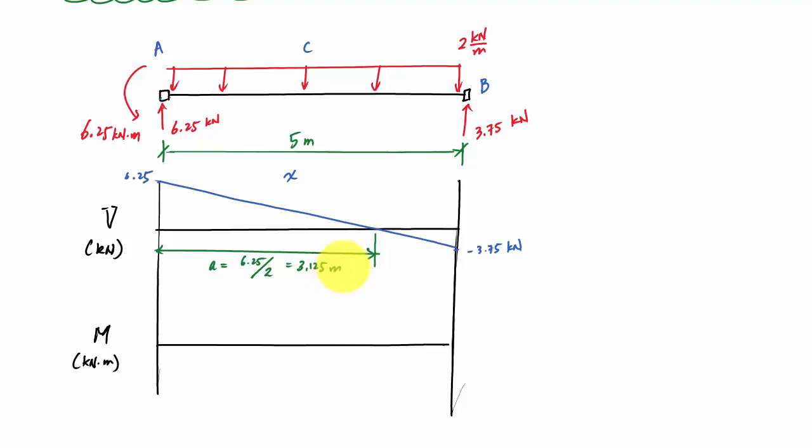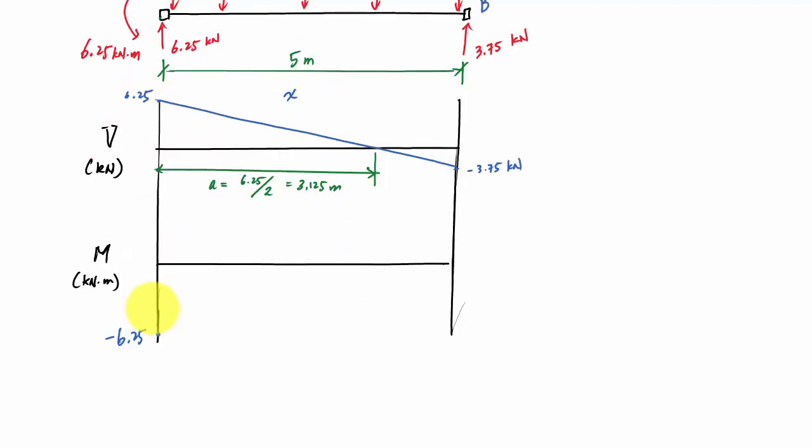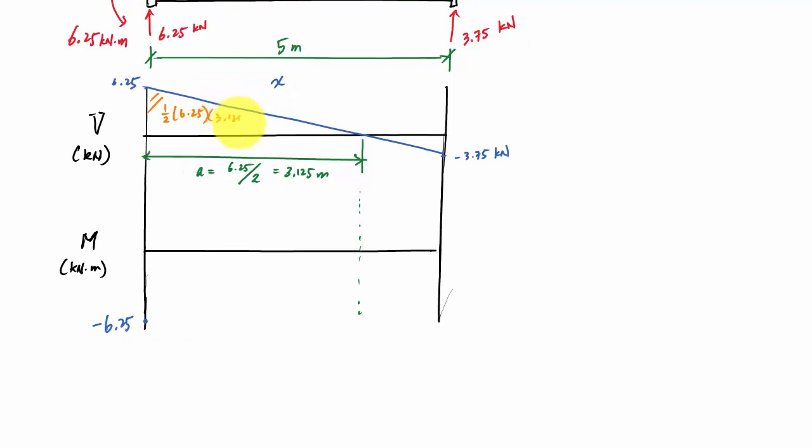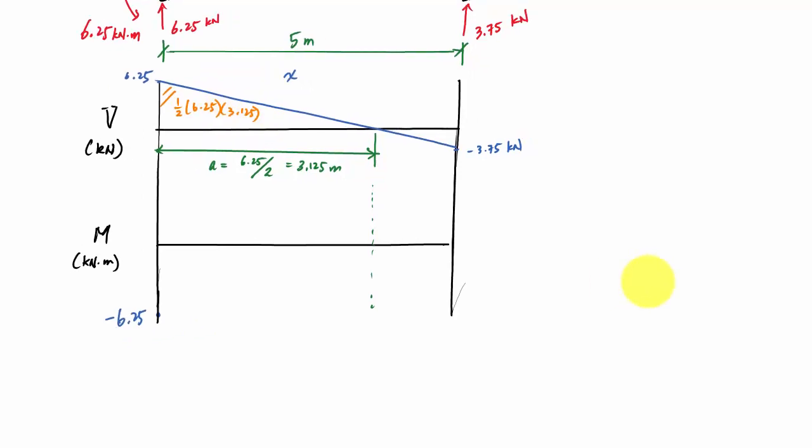And now I can draw the moment diagram. And my moment diagram is going to start at negative 6.25 here, right there. It's going to be parabolic where I have the zero shear. That's an interesting point for me because that's going to be a maximum here. And the change is going to be the area under the shear diagram here, which is 1 half 6.25 times 3.125. And that area is equal to 3.52. I'm going to get right here, I'll get a max of 3.52 kilonewton meters. And my curve is parabolic. I know here I have a zero shear, so this is horizontal. And then here I have a positive slope of 6.125 like this.